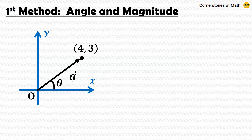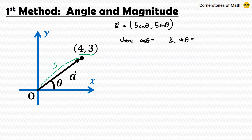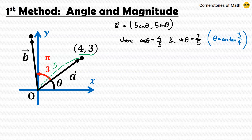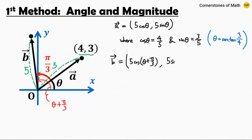So in our given problem, for vector a whose coordinates are (4, 3), we can easily find that the magnitude of the vector is 5 by the Pythagorean theorem. So we can write vector a as 5 cosine theta, 5 sine theta, where cosine theta equals 4 over 5 and sine theta equals 3 over 5. Or you can also write theta equals arctangent of 3 over 4. Now, if we rotate this vector pi over 3 radians counterclockwise, the magnitude remains unchanged at 5, and the angle becomes theta plus pi over 3. Therefore, vector b can be expressed as 5 cosine(theta + pi/3), 5 sine(theta + pi/3).